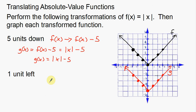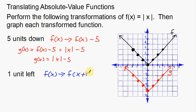Now I'm going to do one more example — this time moving one unit to the left. So I'm showing you an example of going up and down, and now going left and right. It's a little bit different. When I move left or right, I add or subtract directly to the x. Since I'm moving left, I'm going to add one directly to the x. Notice the difference between moving left/right versus up/down — up and down is much easier.